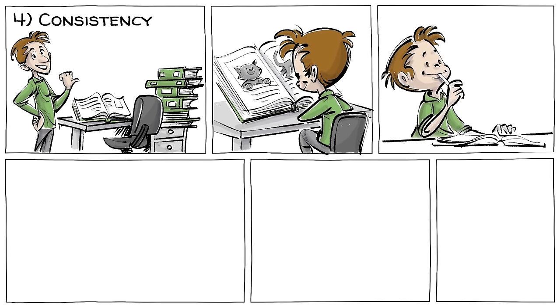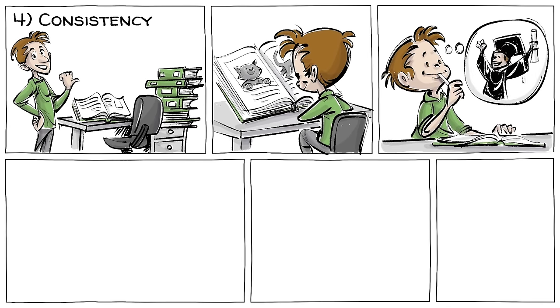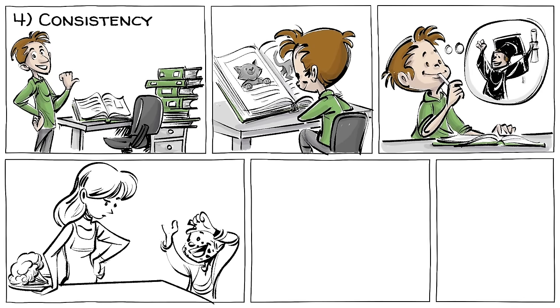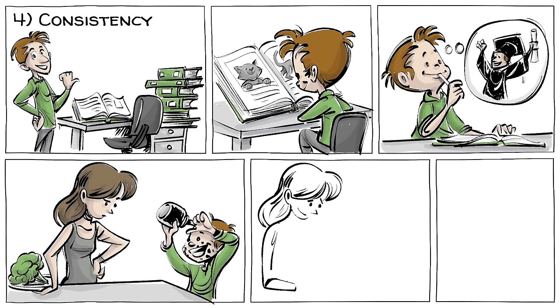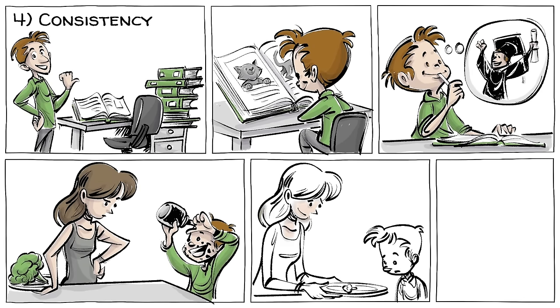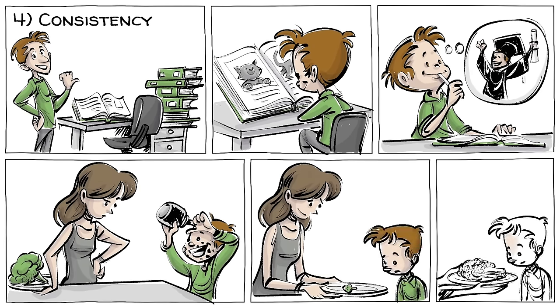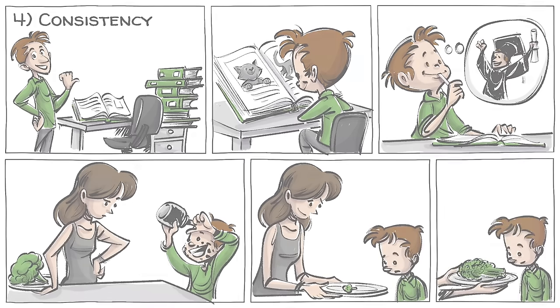Fourth is consistency. We are more likely to do something if it's consistent with past behavior. This is because we align our actions with expectations. To influence someone, ask for small commitments first and larger ones later.